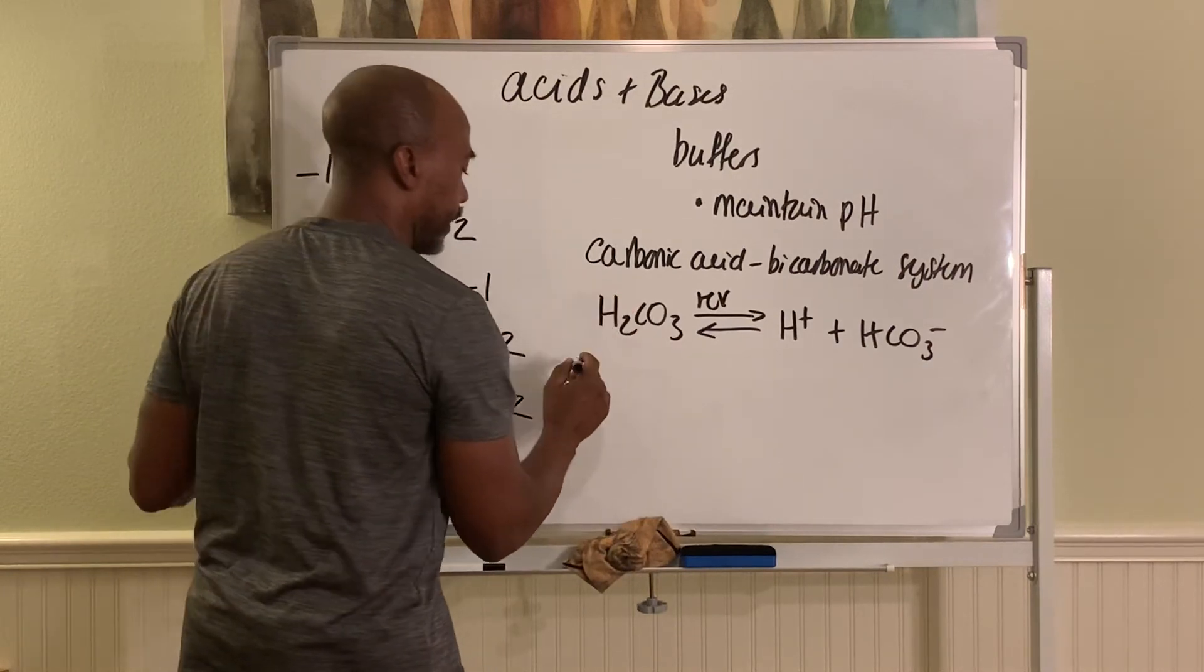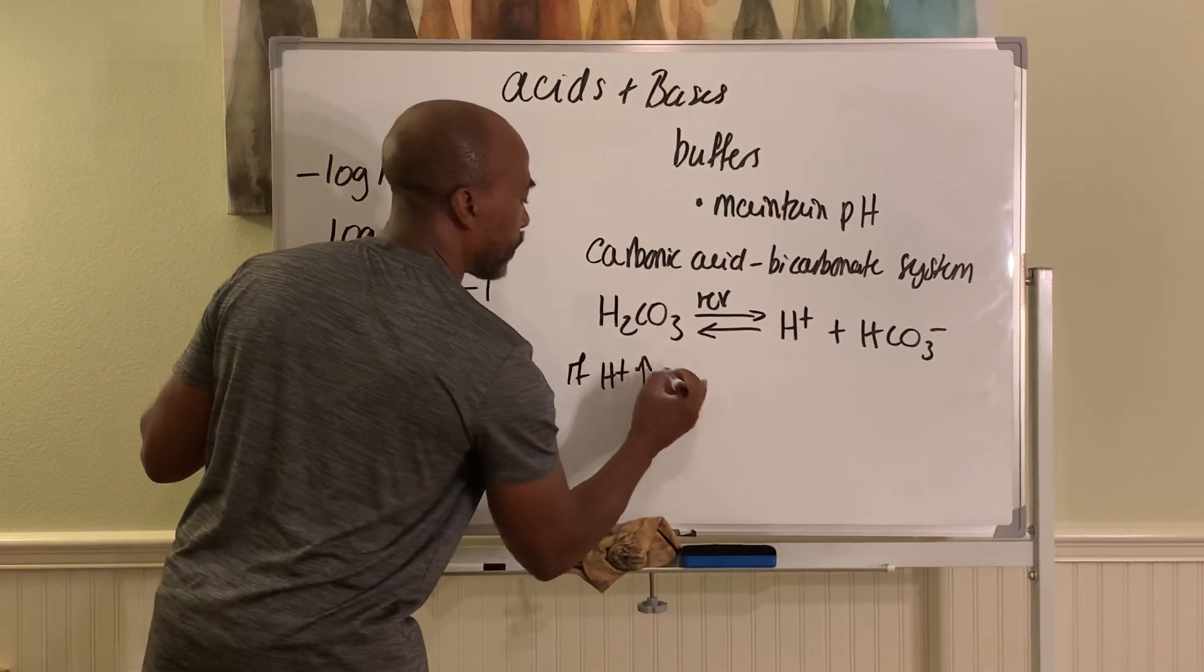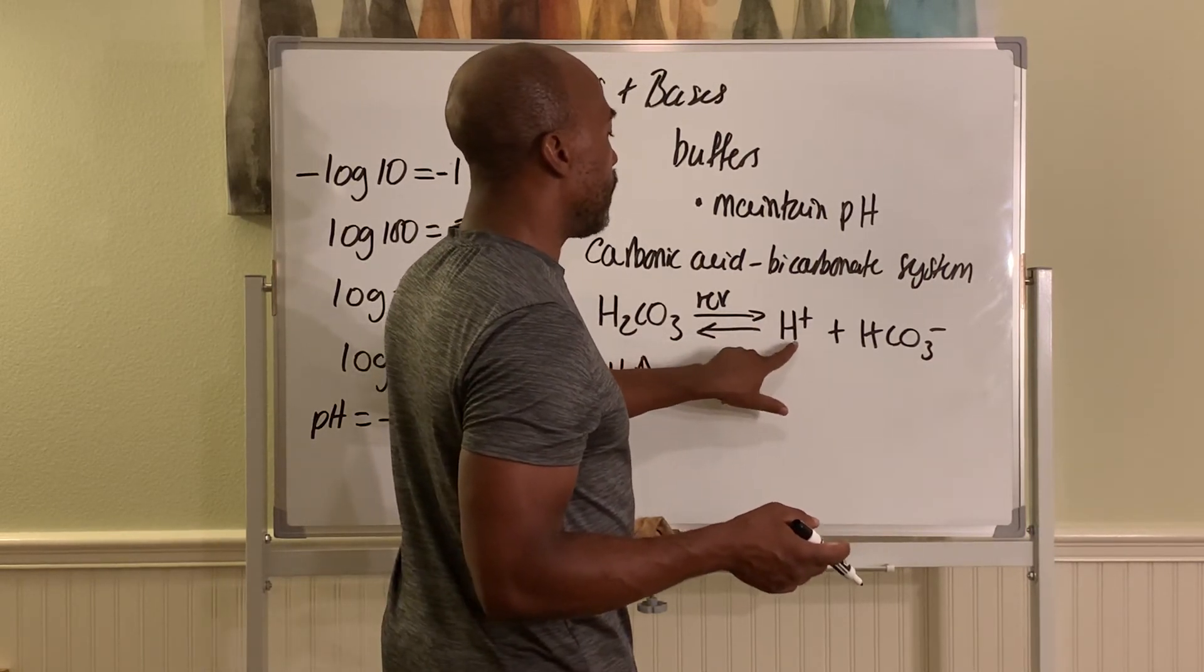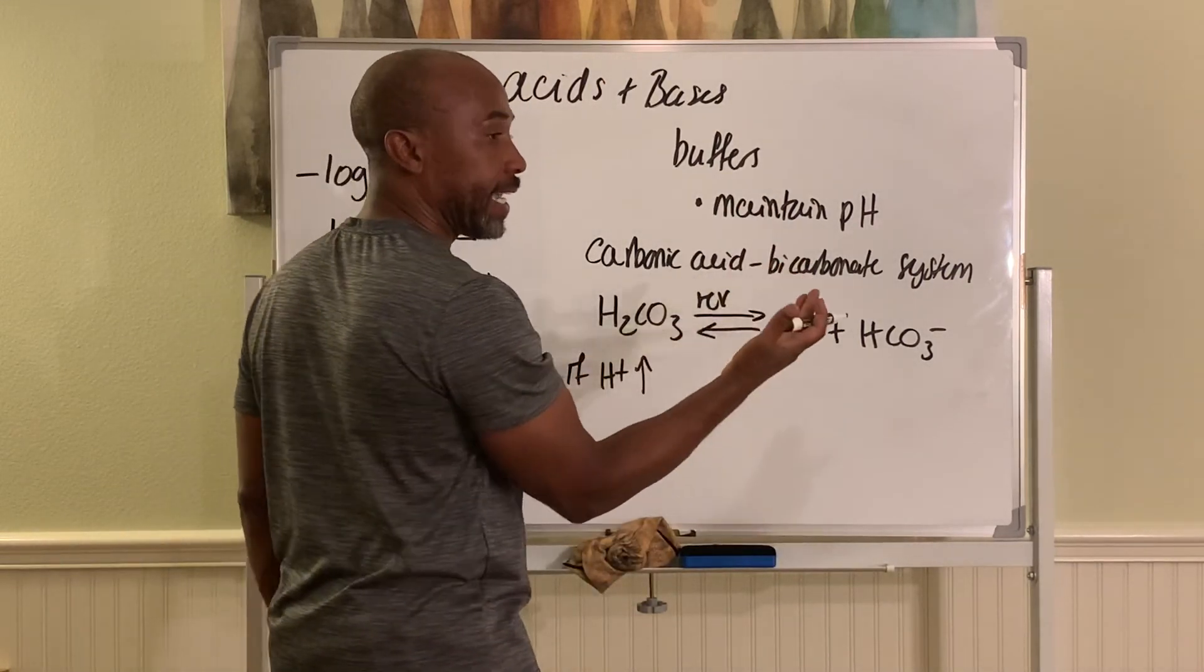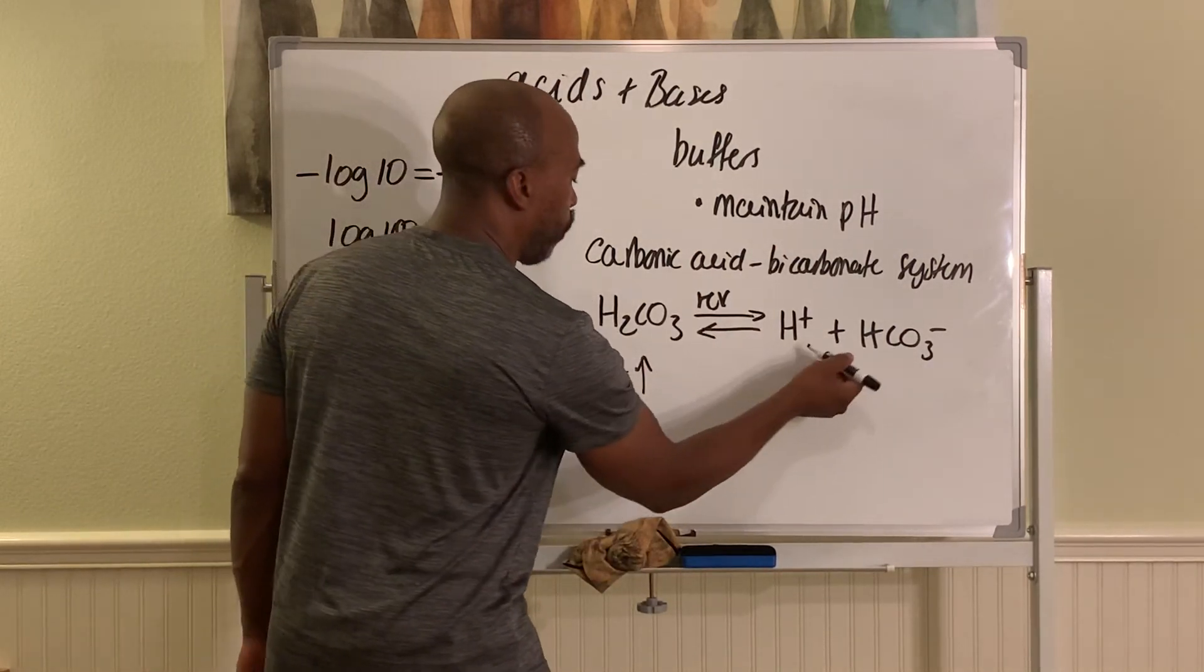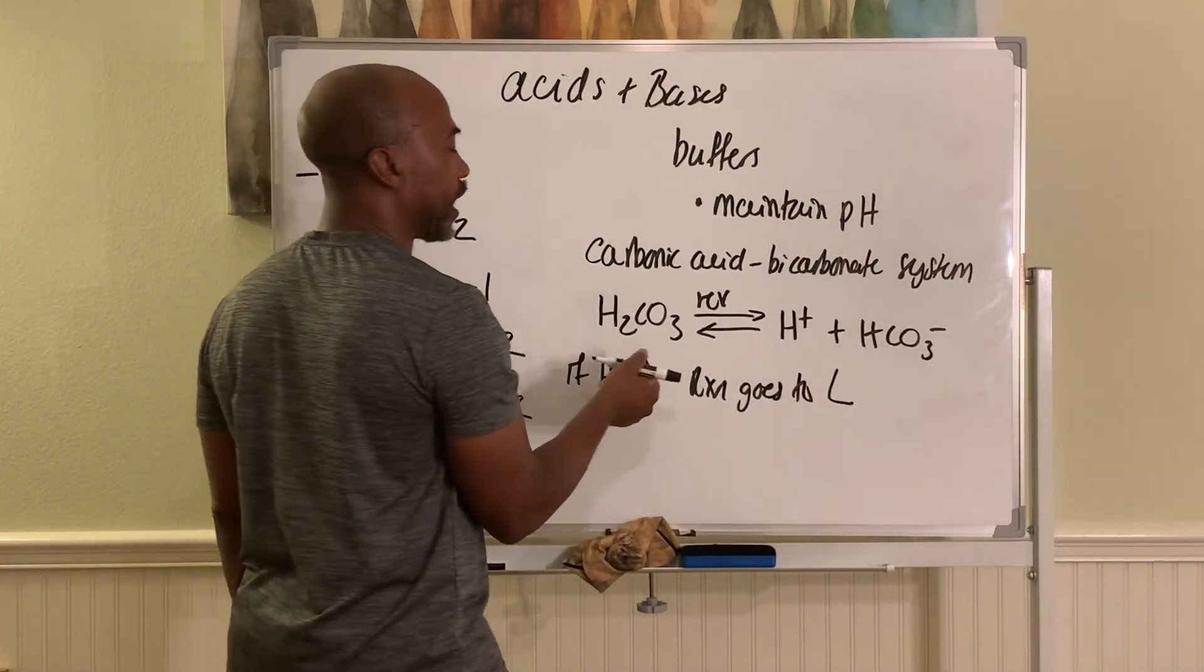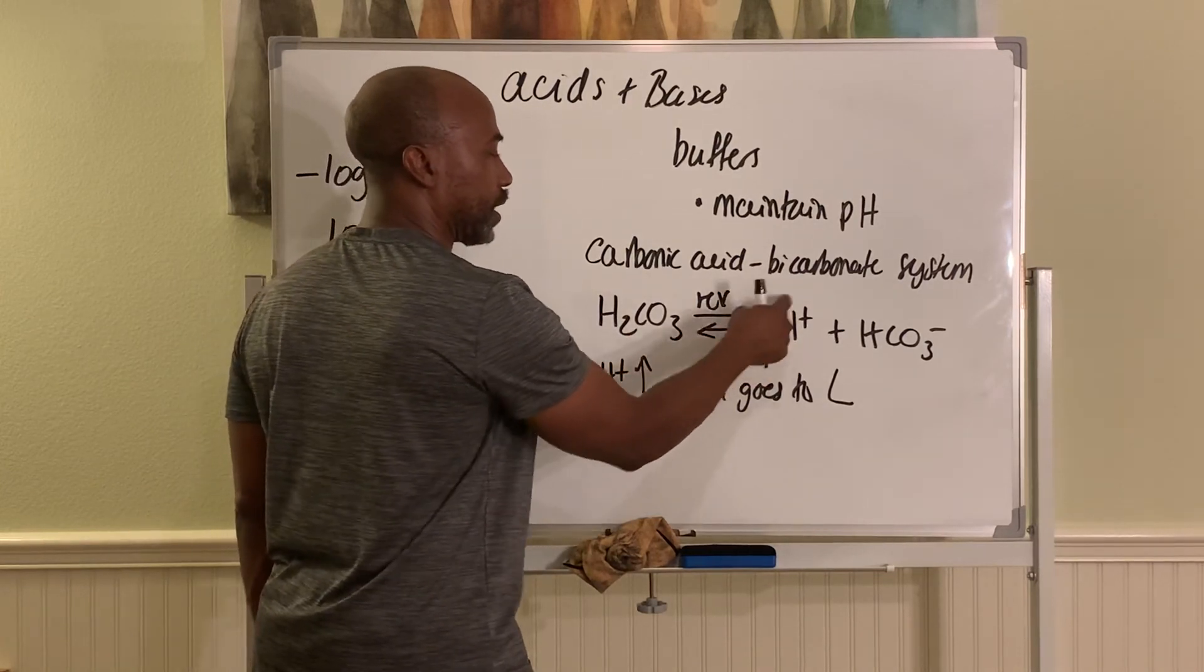And so this is how it works. If H plus levels go up - this is something that's going on in your cell - and all of a sudden you start to make H pluses, then this value will start to go high. And if it goes high, it will change the pH. So if this goes up, the reaction will go to the left. The reaction goes to the left this way because it's trying to combine it to make this, that way you don't get it too high.